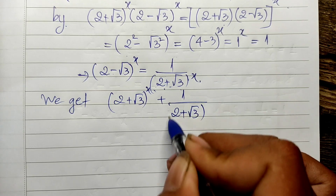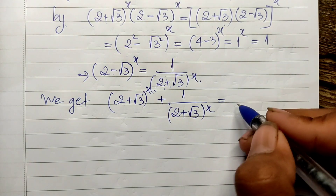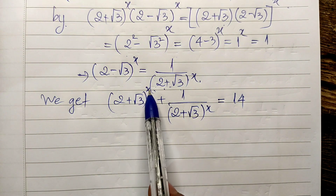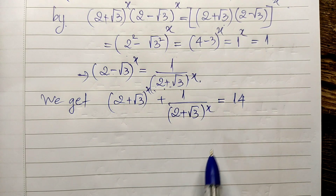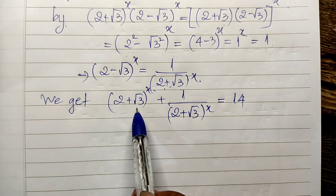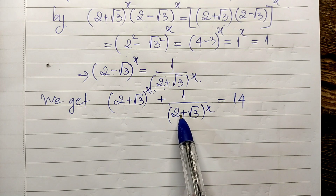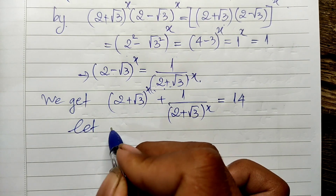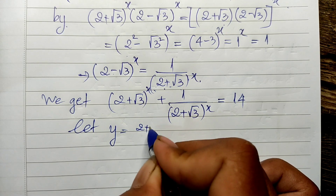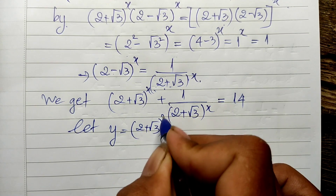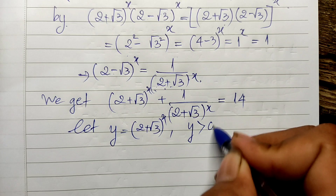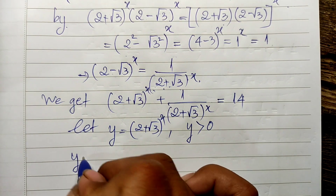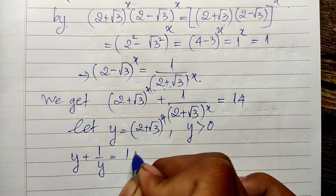So (2 plus square root of 3) to the power 8 plus 1 divided by (2 plus square root of 3) to the power 8 is equal to 14. We see our equation has the same base and exponent on both terms, so we can let this part equal another variable. Let y equal (2 plus square root of 3) to the power 8, where y must be positive. So we get the new equation: y plus 1 divided by y equals 14.